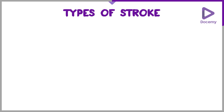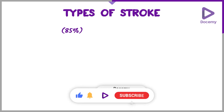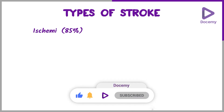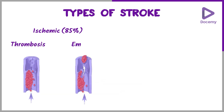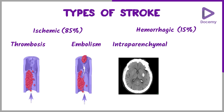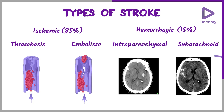There are two types of stroke. 85% of all strokes are ischemic strokes, which could be thrombosis or embolism. Hemorrhagic strokes are 15%, which could be an intra-parenchymal hemorrhage or a subarachnoid hemorrhage.